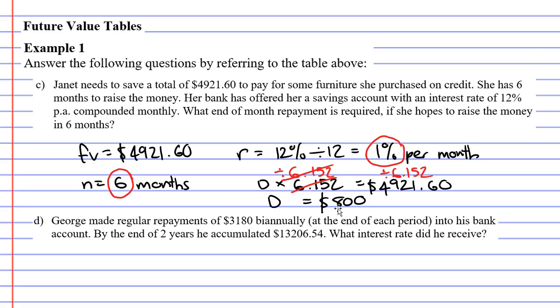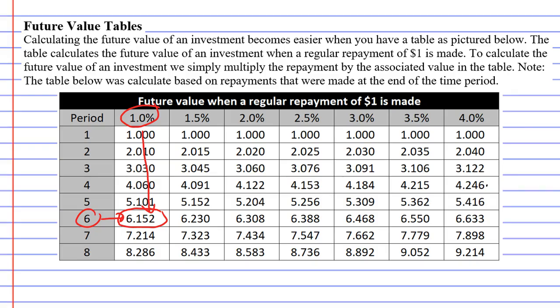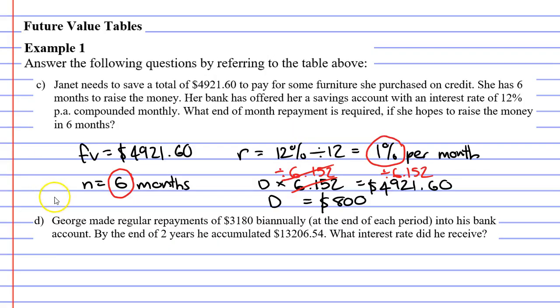Now, there's something I want to point out here that I probably should have mentioned earlier. Notice how it talks about the repayment being at the end of the month, or the end of the time period. This particular table that we've been using only works when the repayment is at the end of the time period. If you get questions where the repayment is made at the beginning of the time period, then you would get a completely different table.